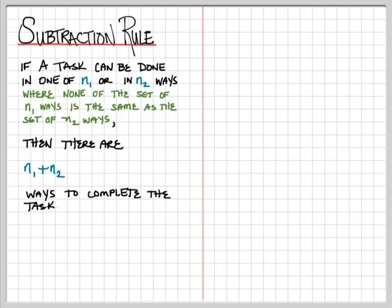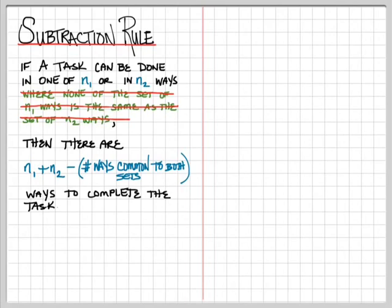Now, whenever you have addition, there's always a subtraction version that goes along with it. So there is a subtraction rule. I've written down what the addition rule is here. That's exactly what the addition rule says. The subtraction rule allows us to remove the requirement that the ways of completing the task are distinct. But when we remove that requirement, we have to remove the double counting that took place. So the total number of ways that a task can be done in N1 or N2 ways is going to be N1 plus N2 minus the number of ways common to both sets.